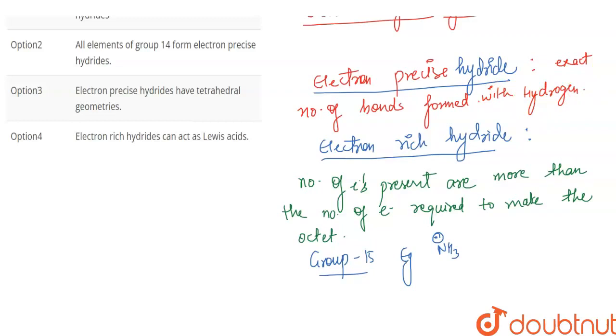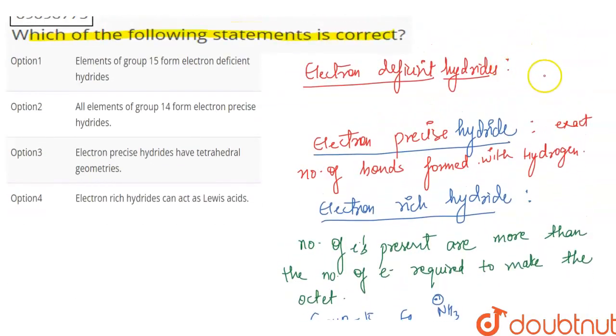Now let's talk about electron-deficient hydrides. Electron-deficient hydrides are basically hydrides where the central atom has incomplete octet.